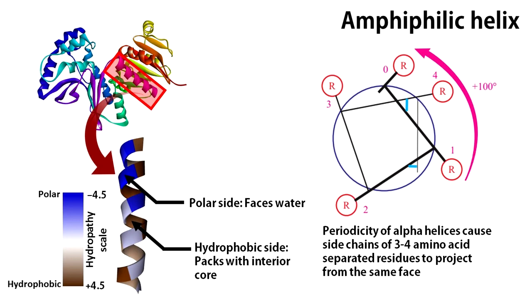There is another fascinating attribute I want to present that is amphiphilic nature of alpha helices. The alpha helix has 3.6 residues per turn.